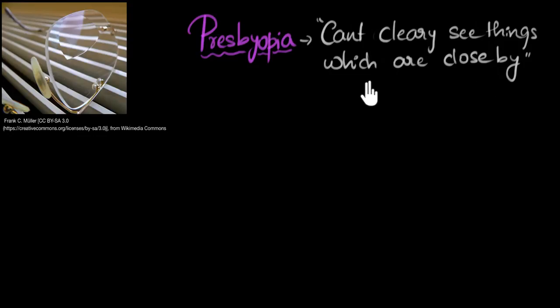Now, this sounds very familiar to another eye condition that we might have learned, hypermetropia, farsightedness. Even in that condition, people can see things far away, but they are unable to see things clearly which are close by, right? Well, the effect is the same, but the cause of that is different, and that's why they are named differently.